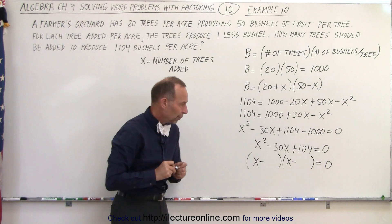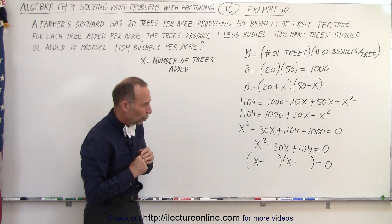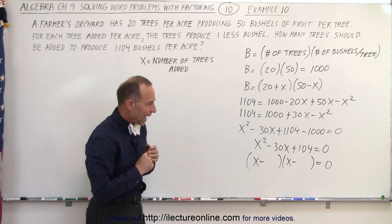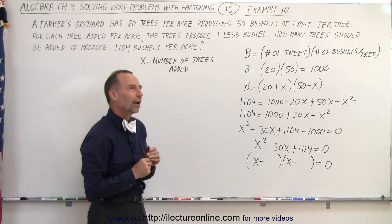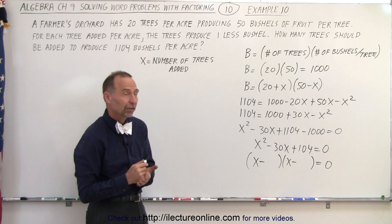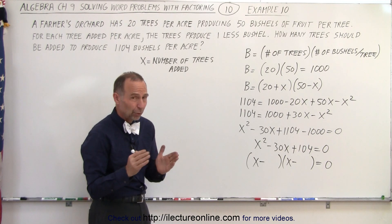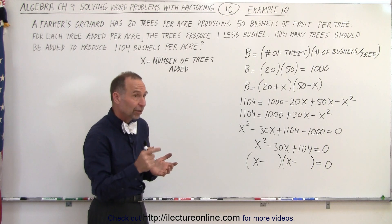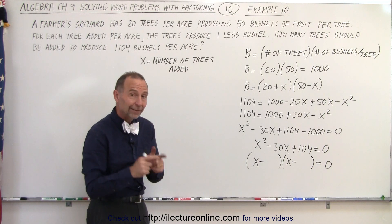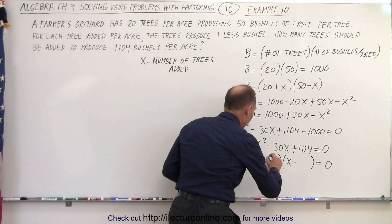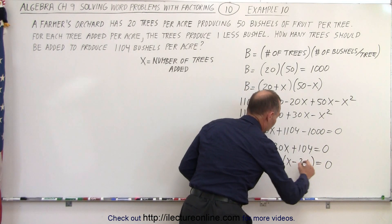Now we're looking for two numbers. When we multiply, we get 104. When we add them, we get minus 30. Now 4 times 25 is 100, but 4 and 25 adds up to 29. But 4 times 26 is 104. And add those two together, that gives us 30. So 4 and 26 will work.